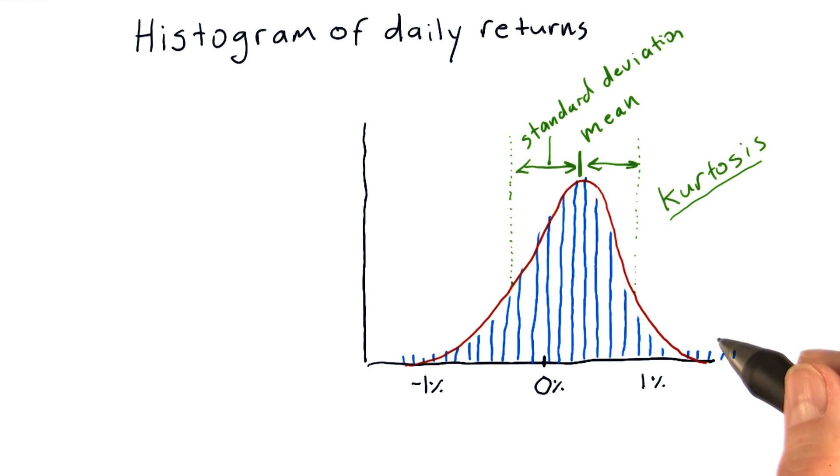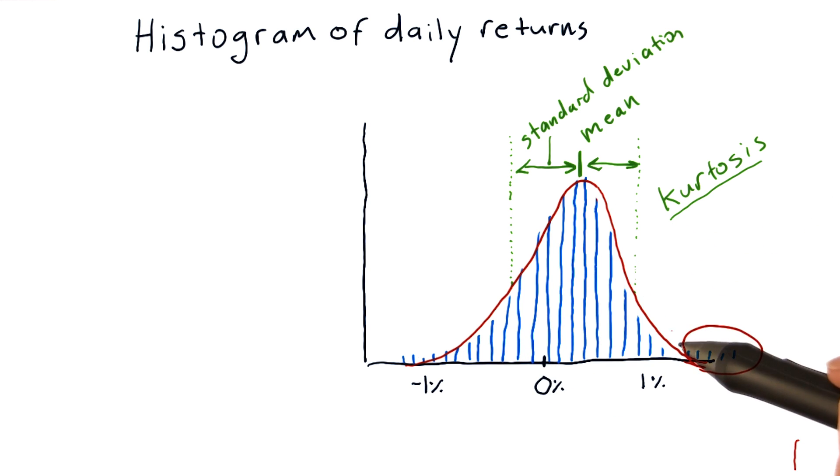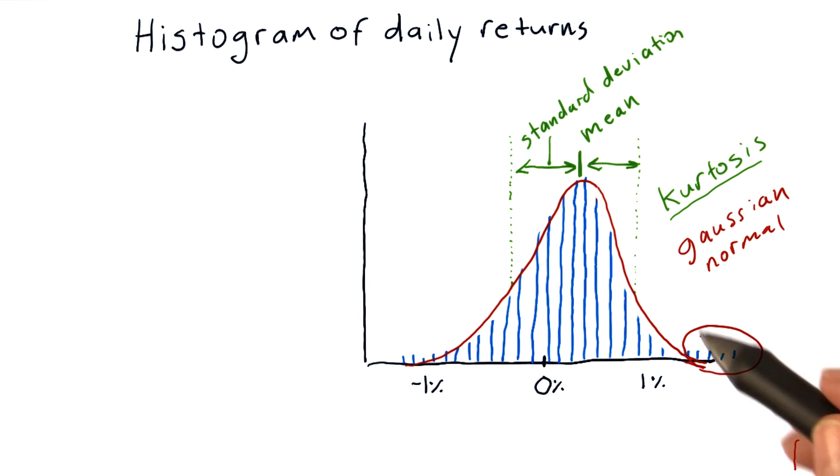Kurtosis tells us about the tails of the distribution. So the tails are the parts out here towards the ends. And if we assume that our distribution is similar to a Gaussian distribution, or normal distribution, the measure of kurtosis tells us how much different our histogram is from that traditional Gaussian distribution.